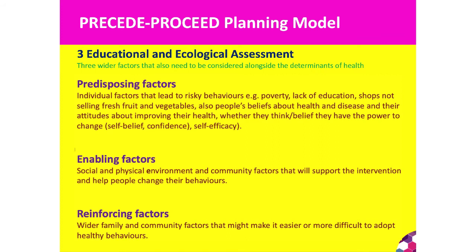The educational and ecological assessment looks at predisposing, enabling and reinforcing factors. Predisposing factors are mostly individual-level: poverty, lack of education, shops not selling fruit and veg, people's beliefs and attitudes about health, and whether they think they have the power and confidence to change their circumstances. Enabling factors are the individual and wider environmental factors that will support the intervention and help people change their behaviours. Reinforcing factors are the wider family and community factors that might make it easier or more difficult for people to adopt healthy behaviours — they work on both predisposing and enabling factors.